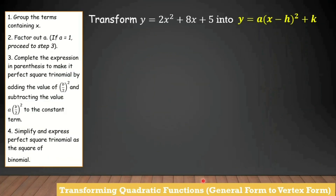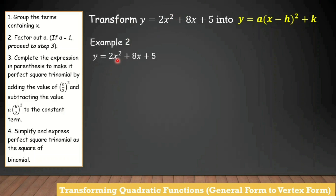Another example: y equals 2x squared plus 8x plus 5, transformed into vertex form y equals a times quantity x minus h squared plus k. So our equation is y equals 2x squared plus 8x plus 5. Here a is 2, b is 8, c is 5 — the quadratic term, linear term, and constant term.